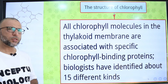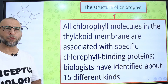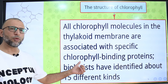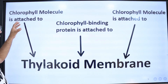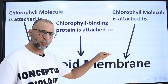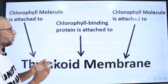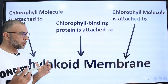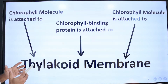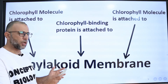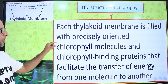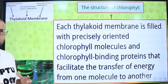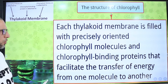All chlorophyll molecules in the thylakoid membrane are associated with chlorophyll-binding proteins, and biologists have identified about 15 different kinds of chlorophyll-binding proteins. In the thylakoid membrane, chlorophyll molecules are attached with the help of the phytol tail, and alongside them, chlorophyll-binding proteins are present. These chlorophyll-binding proteins facilitate the transfer of energy from one chlorophyll molecule to another.